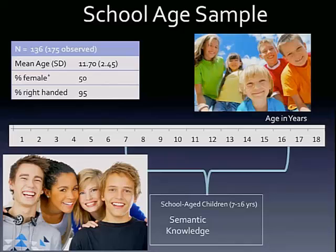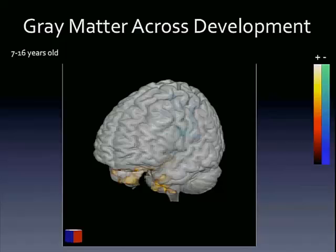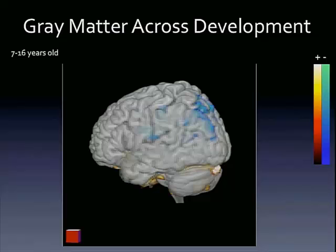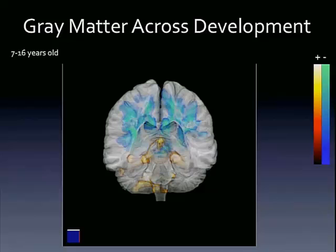There's a strong logarithmic relationship between semantic knowledge and age, which explains 69% of the variance in semantic knowledge. Now looking at gray matter volume development across development in this age group: we see decreases in cortical density in the parietal lobe and increases in the orbital frontal, a little bit in the anterior temporal region — and this is what you would expect with cortical development in this age group.